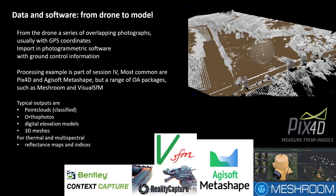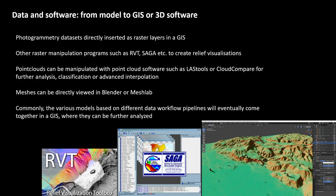For thermal and multispectral data, we also have reflectance maps and indices — orthophotos that store the originally recorded radiation values. These outputs can be analyzed in other software more optimized for that purpose. For example, photogrammetry datasets can be directly inserted as raster layers in a GIS. Other raster manipulation programs such as RVT or SAGA can create advanced relief visualizations. Point clouds can be manipulated with software such as LAStools or CloudCompare for further analysis, classification, and advanced interpolation. 3D meshes can be directly used in Blender or MeshLab, and commonly the various models will eventually come together in a GIS for further analysis.